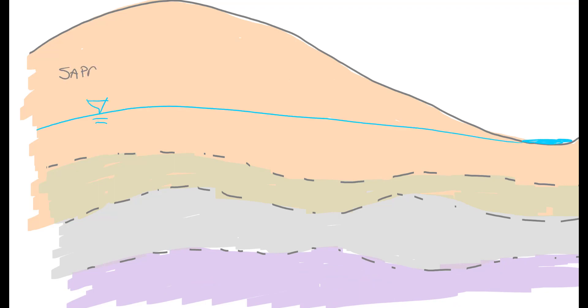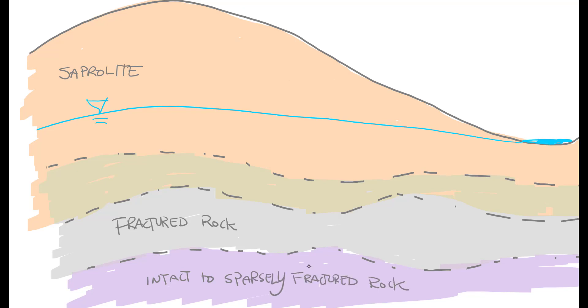Then there's the stream and the water table. We'll label the saprolite at the top, the fractured rock, and the sparsely fractured rock underneath it. And then between the fractured rock and the saprolite is the transition zone.